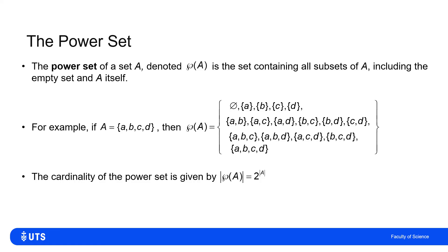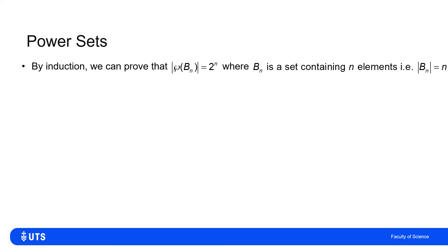We claim that the cardinality of the power set — the number of possible distinct subsets of A — will be 2 raised to the power of the cardinality of A. We'll try to prove this by induction. Let B_N be a set containing N elements, so the cardinality of B_N is N, and we want to show that the cardinality of the power set φ(B_N) is 2^N.